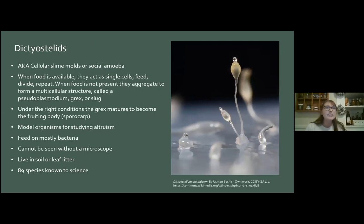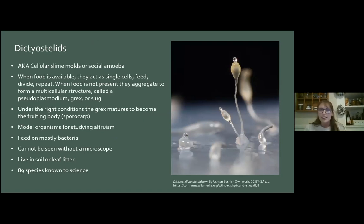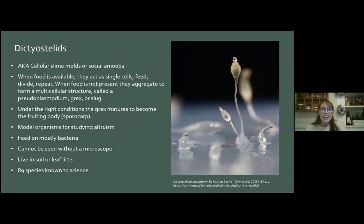The first type is called dictyostelids. These are cellular slime molds, or the social amoeba — some really cool nicknames. They are a really great example of altruism in nature. They feed mostly on bacteria. You don't actually see them; they live in the soil or leaf litter and cannot be seen by the naked eye. There are only 89 species known to science, so if you want to become an expert in something, that's a good place to start. You can get them down with a look under the microscope.